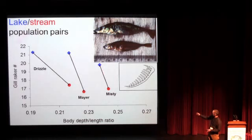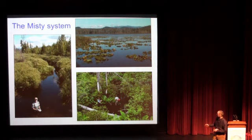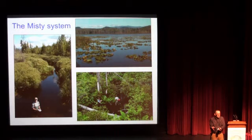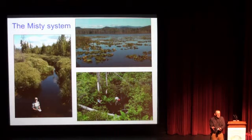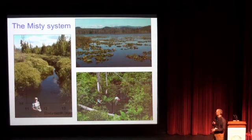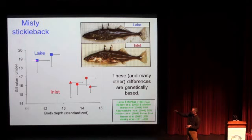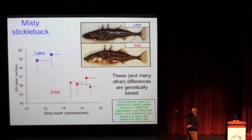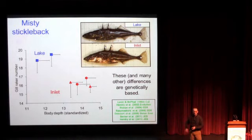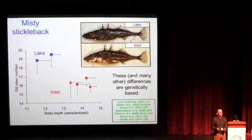We first looked at the Misty Lake system — a small, shallow lake with two streams, a marshy inlet stream and a stream flowing out of the lake. If you sample fish and look at gill rakers and body shape, you see that lake fish have more gill rakers than stream fish from the inlet, and lake fish have shallower, more streamlined bodies than stream fish. Importantly, these and many other differences have been shown to be genetically based through multi-generational common garden experiments — it's not just phenotypic plasticity.